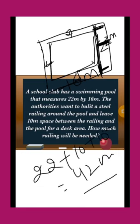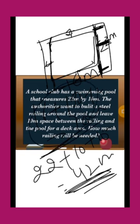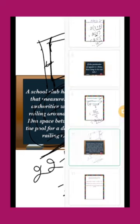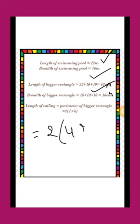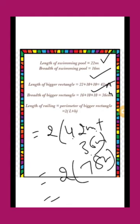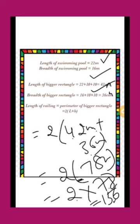The total length is 22 + 10 + 10 = 42 meter. Similarly, the total breadth is 16 + 10 + 10 = 36 meter. So the length of railing equals the perimeter of the bigger rectangle: 2 into (l + b) = 2 into (42 + 36) = 2 into 78 = 156 meter. So 156 meter is your answer.